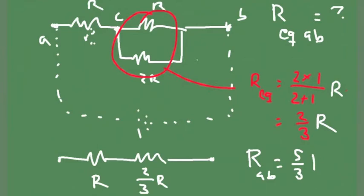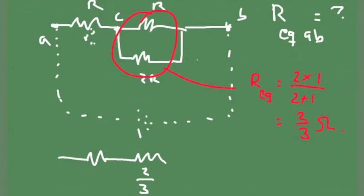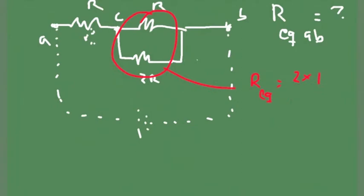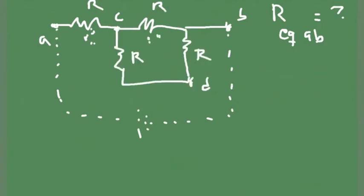Now let's go back to the same circuit as before. That's what we had originally. Now I'm going to do something else — I'm going to connect a cable between C and D and ask the same question: what is the equivalent resistance now between A and B for this new circuit?